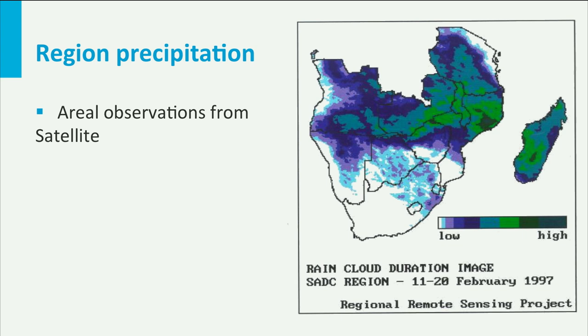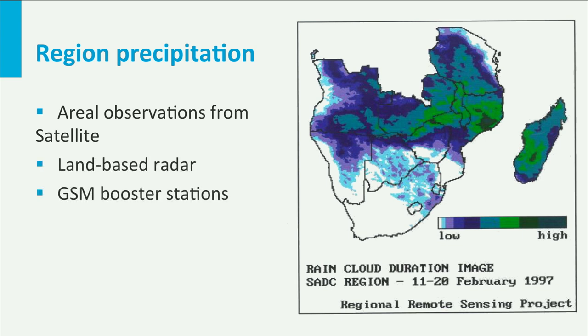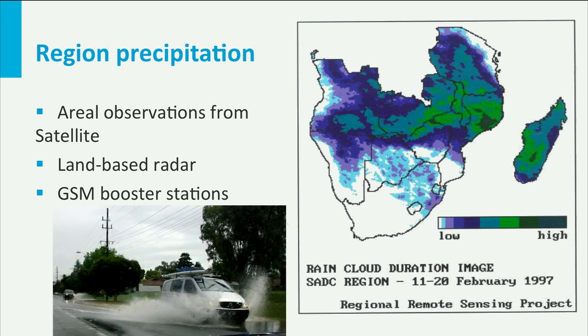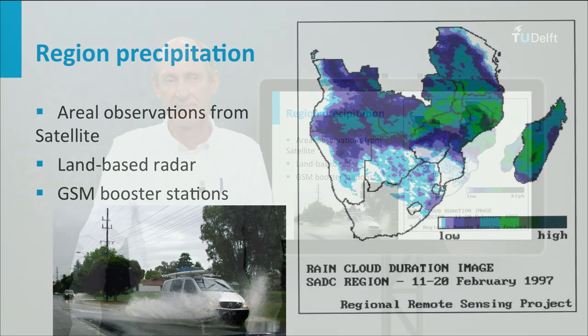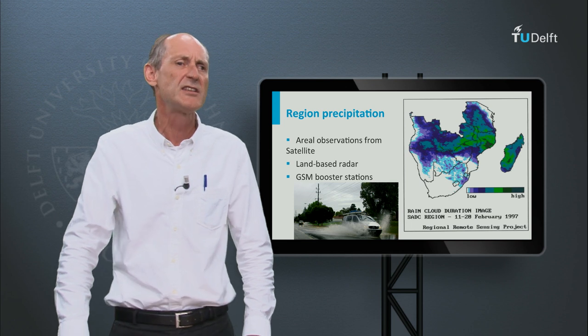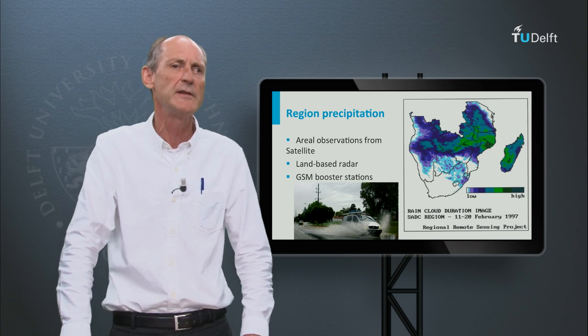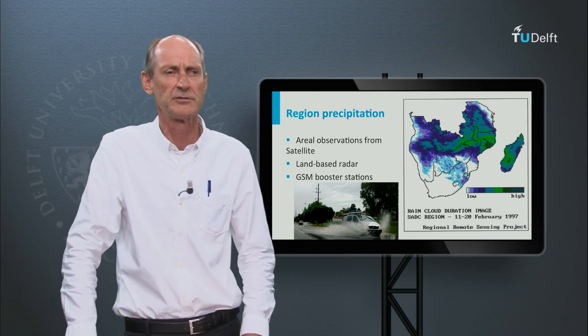There are other new and innovative ways of precipitation measurement, such as land-based radar, information from GSM booster stations, and using the speed of cars as a function of the weather or the speed of their screen wipers. There is still a lot of information around that we can use.